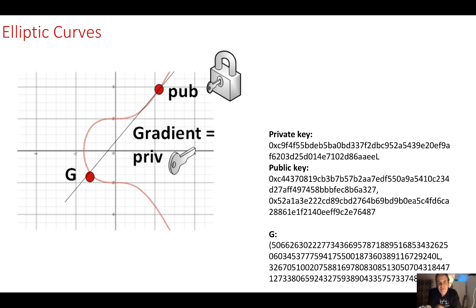First we'll look at elliptic curves. With elliptic curves we have an equation such as y squared equals x cubed plus ax plus b. With this we end up with our curve, then we take a point on the curve called the generator and modify the points so that they fit onto the curve. This is a simple case of creating a public key and a private key, where the private key is a gradient and the public key is the point at which we cut the elliptic curve again.